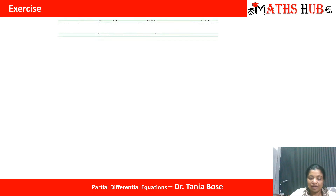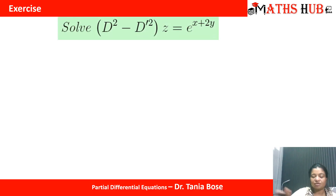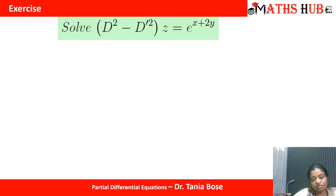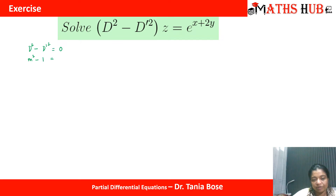Now let us apply this in the question. We need to solve D² minus D'² z = e^(x+2y). This is a non-homogeneous equation, so the solution comprises the particular integral as well as the complementary function. For the complementary function, we take the auxiliary equation D² minus D'² = 0. Converting to an algebraic expression by putting D = m and D' = 1, we get m² minus 1 = 0, so m² = 1.